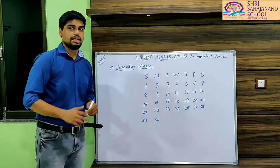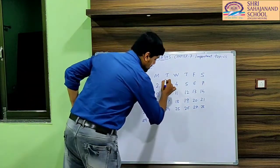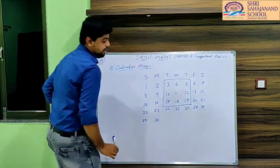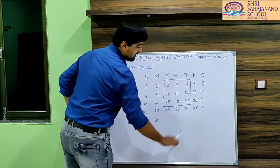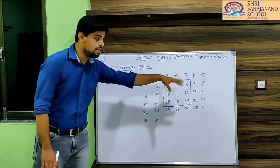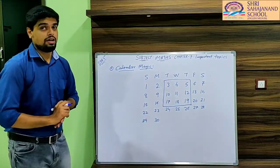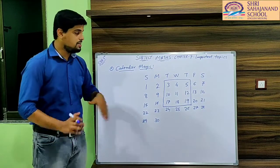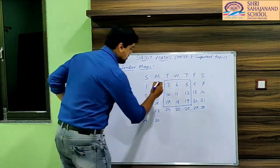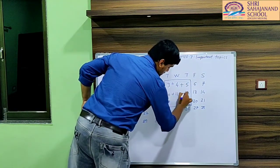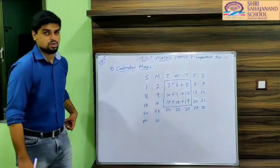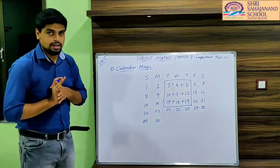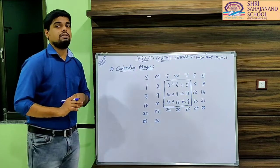So in Calendar Magic, they are telling us that if we take any 9 numbers from the Calendar. Suppose I have taken these 9 numbers: 3, 4, 5, 10, 11, 12, 17, 18, and 19. If I take any 9 numbers from this calendar, they have given us one simple trick to find the sum of all these numbers. Adding all 9 numbers would take a long time, so Calendar Magic has given us a simple trick.